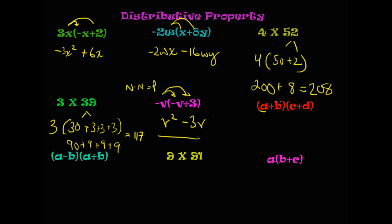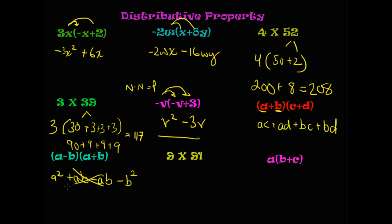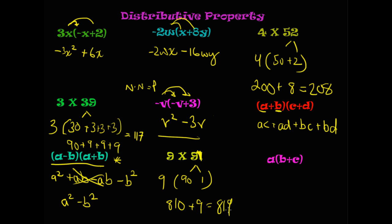For (a plus b) times (c plus d): distribute a through c and d — a times c plus a times d — then b: plus b times c plus b times d. For (a minus b) times (a minus b): a times a is a squared, a times b is ab, minus b times a is minus ab, minus b times b is minus b squared. Notice the two middle terms cancel, leaving a squared minus b squared — that's a difference of two perfect squares, which we'll discuss later. And 9 times 91: break 91 into 90 plus 1, so 9 times 90 is 810 and 9 times 1 is 9, giving 819. Finally, a times (b plus c): a times b is ab, a times c is ac.